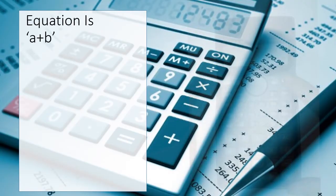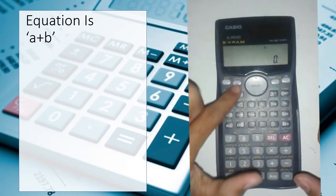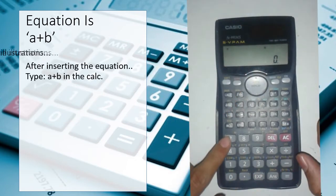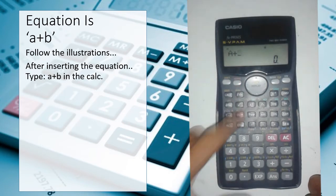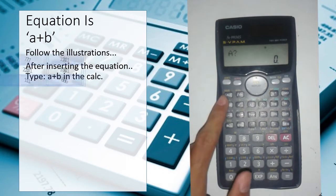Now the equation is a plus b. Start the calculator and press alpha a plus alpha b. Then press the calc button. Now the calculator will ask you for the values of a and b.